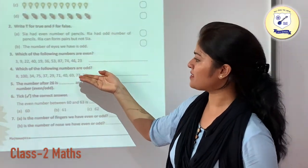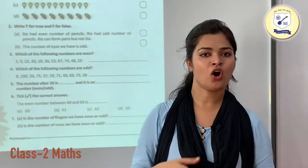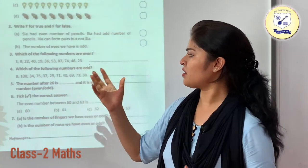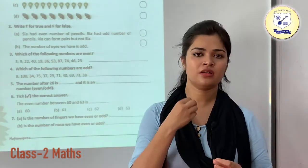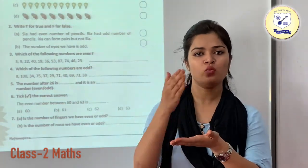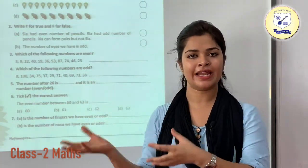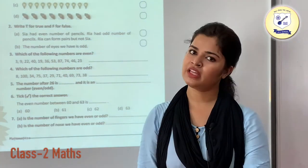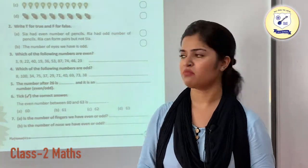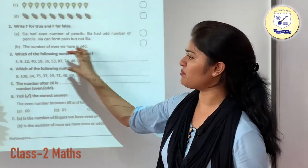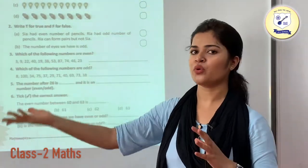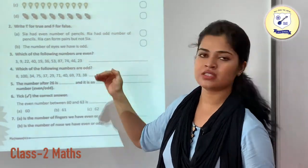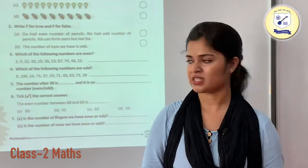Now you need to encircle the odd numbers. The numbers which are not having 0, 2, 4, 6 or 8 at their ones place — they will be your odd numbers. The numbers which were left in the first question — those are going to be your odd. You can do this by yourself.